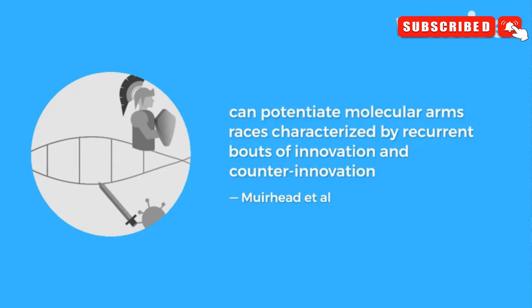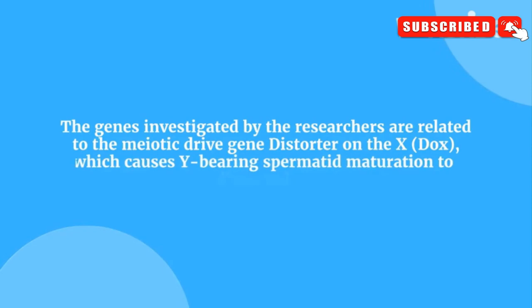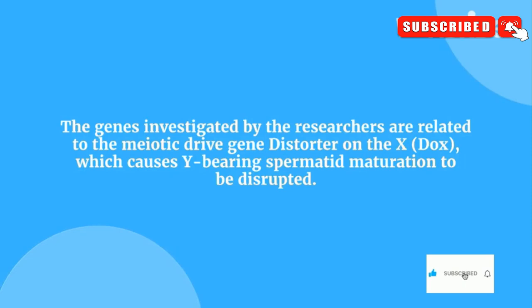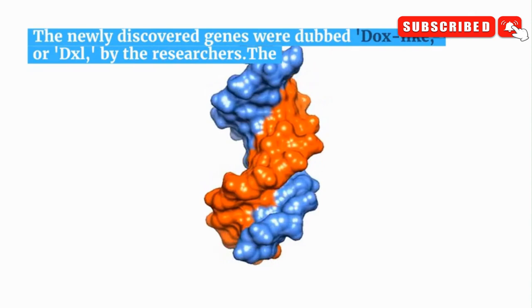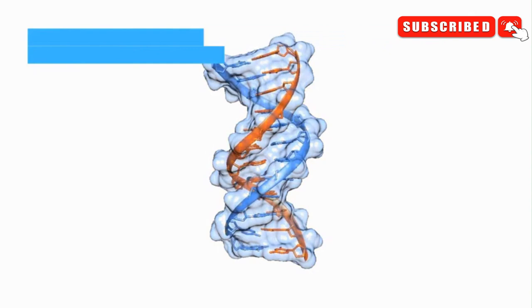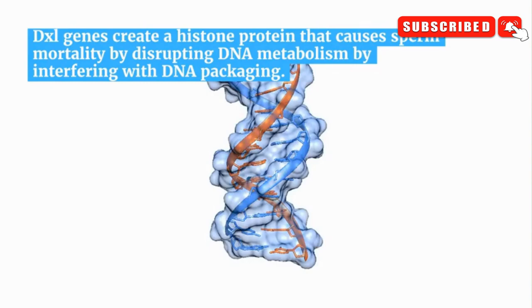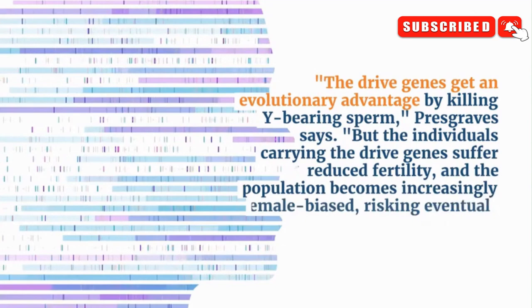The genes investigated are related to the meiotic drive gene distorter on the X chromosome, which causes Y-bearing spermatid maturation to be disrupted. The newly discovered genes were dubbed Distorter on X-like, or DXL, by the researchers. The DXL genes create a histone protein that causes sperm mortality by disrupting DNA metabolism — specifically by interfering with DNA packaging. The drive genes gain an evolutionary advantage by killing Y-bearing sperm.